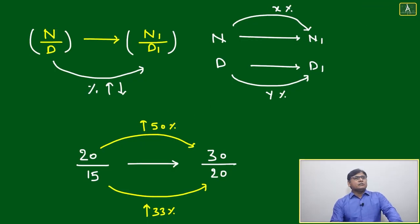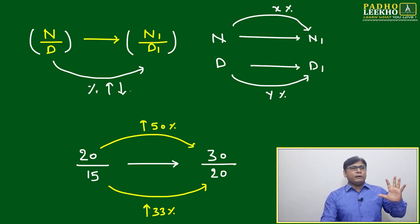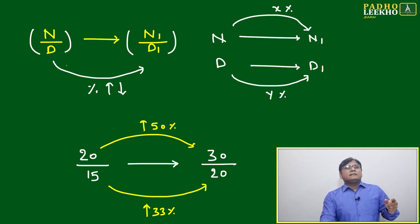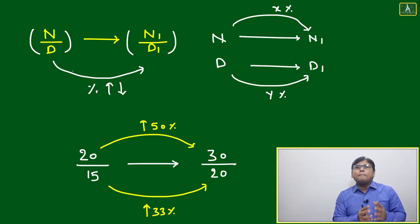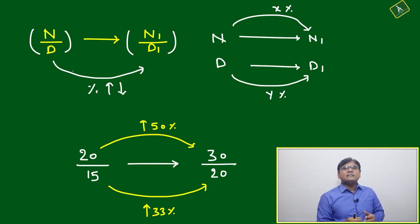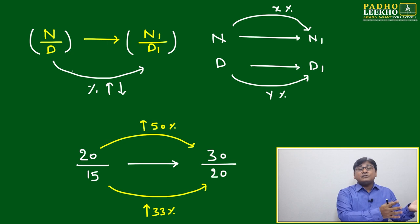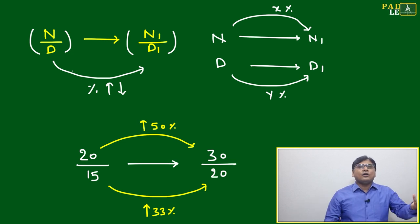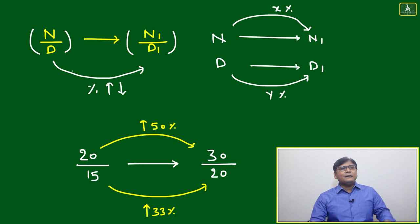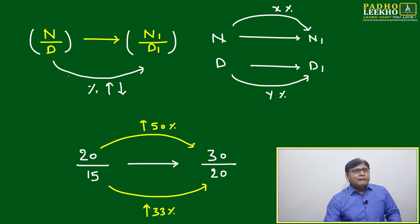Let's take a few more points to understand percentage change in a ratio — n by d changing to n1 by d1. We want to check how much percent the complete ratio has changed. We've already seen properties based on individual numerator and denominator changes. Based on those percentage changes we decided which ratio is more and which is less. Now we want to check whether the complete ratio is increasing or decreasing.